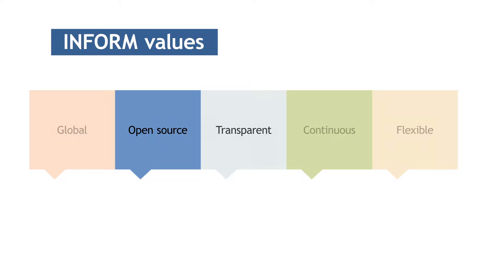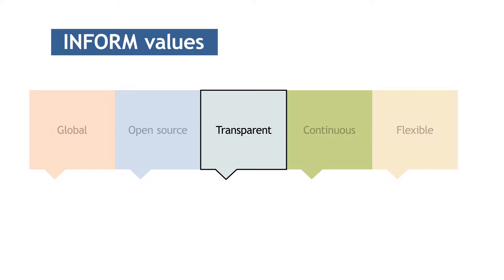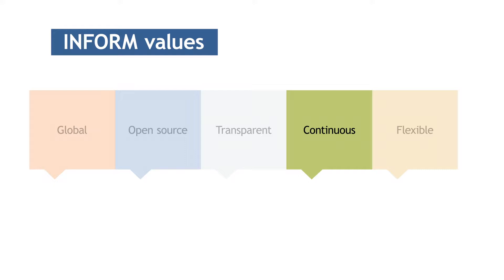Open source: all data used in the INFORM model process is open and in the public domain, and all the results are freely available. Transparent: the methodology and sources are published and are available for review by all. Continuous: INFORM models are always available, regularly updated, and comparable over time.